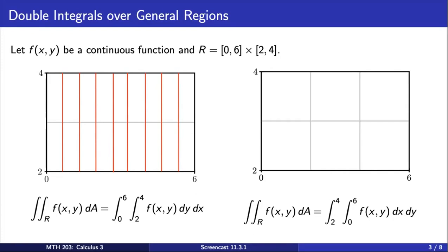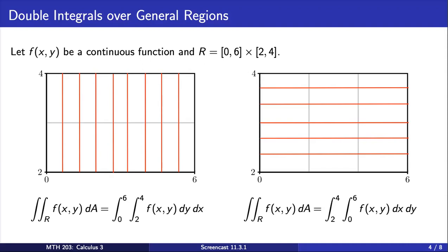Similarly, on the right-hand side, when we integrate with respect to x first, we are slicing the rectangle in the x direction. Each one of the red slices is constant length in the x direction from 0 to 6. We take these slices for each y value from 2 all the way to 4. Integrating over rectangles gives us these constant values in the limits of integrals because our slices always have constant length.